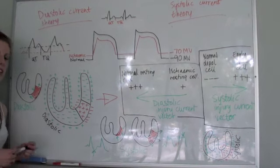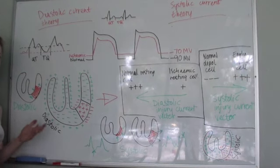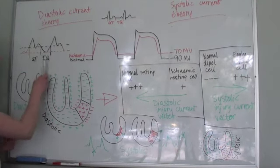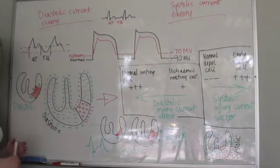The thing is that the ECG machines that we use utilize this TQ area as the zeroing point for the baseline.